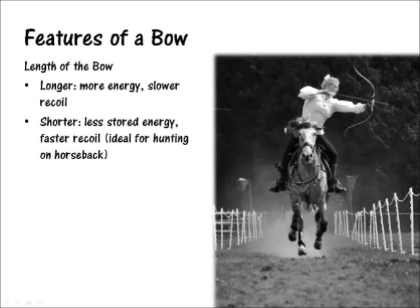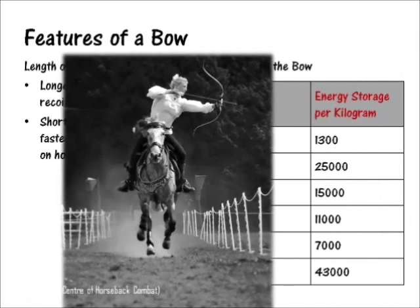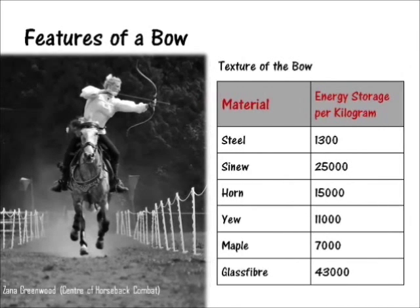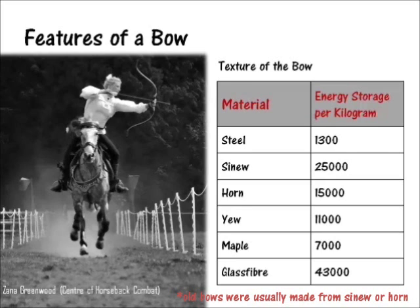Shorter bows' ability to recoil faster makes them ideal for hunting purposes. The amount of energy stored also depends on the material that the bow is made of. This chart shows the energy storage capacity of different materials. Modern bows are mostly made from glass fiber that stores a lot of energy for a lighter mass.